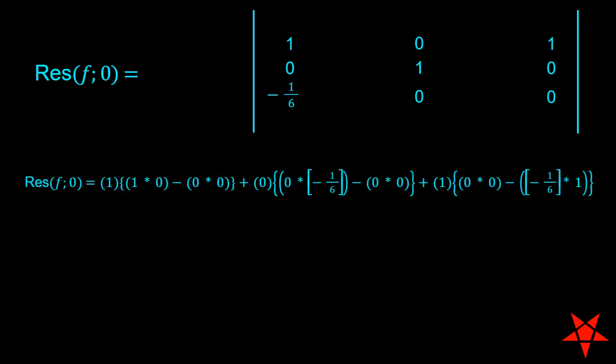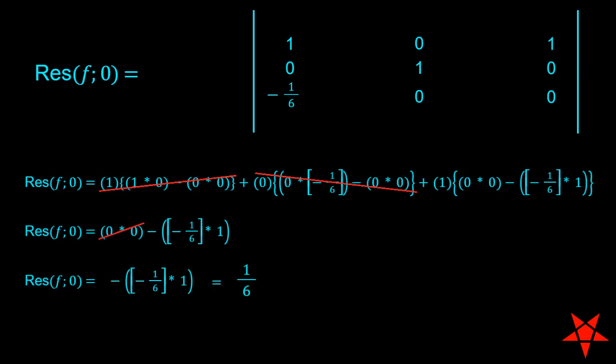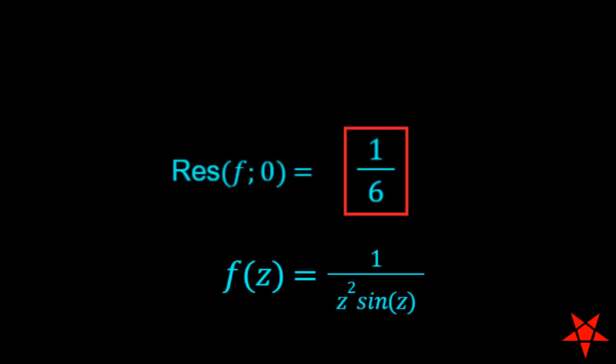If you have further questions about the formulas now on screen, then feel free to hit me up. Otherwise, evaluation of the 3 by 3 determinant gives us positive 1 over 6 for the residue of 1 over z squared sine z at z equals 0.